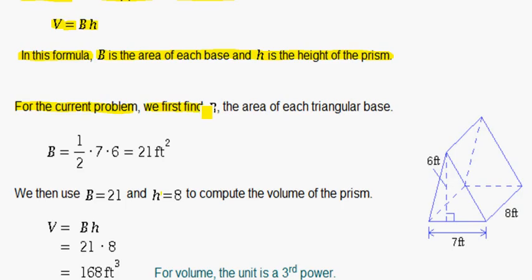For the current problem, we first find B, the area of each triangular base. The base equals one-half times 7, the base of the triangle, times the height, which is 6.